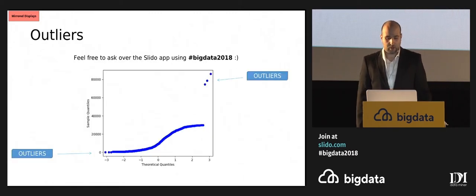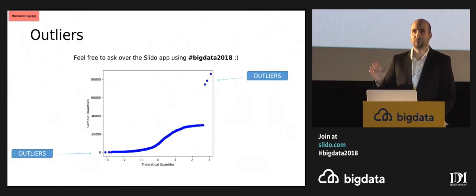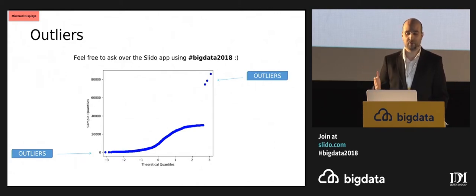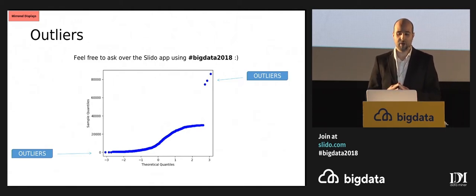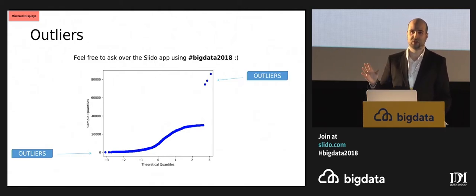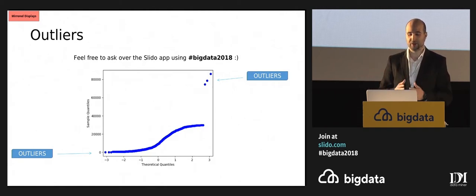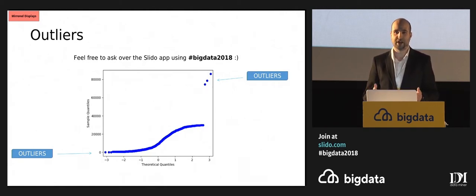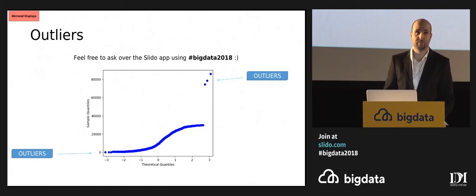How many of you have had this problem before? You get a dataset from whatever you're working on, and you have certain observations or certain outliers that are completely out of the mean, completely different from the rest of your data, and it causes all sorts of problems.